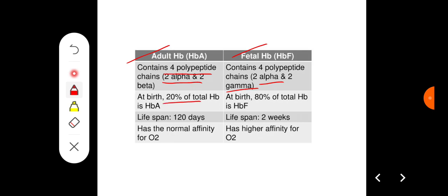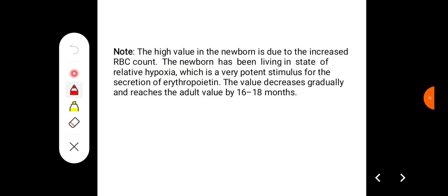At birth, 20 percent of the total hemoglobin is adult hemoglobin, and 80 percent of the total hemoglobin is fetal hemoglobin. Lifespan of adult hemoglobin is 120 days, whereas lifespan of fetal hemoglobin is two weeks. Functionally, adult hemoglobin has normal affinity towards oxygen, whereas fetal hemoglobin has higher affinity towards oxygen.